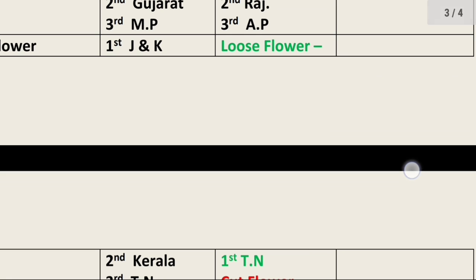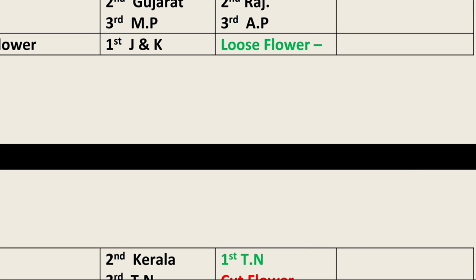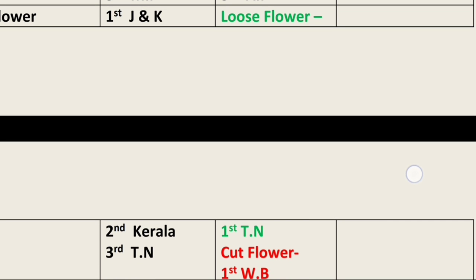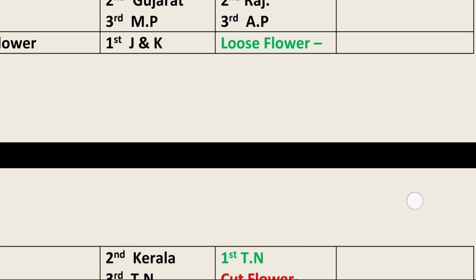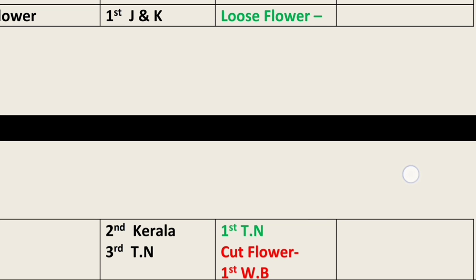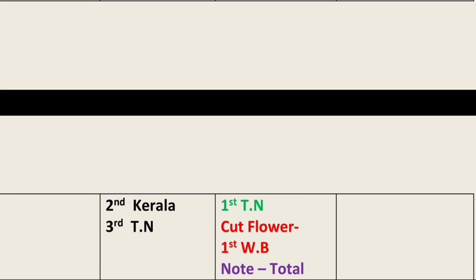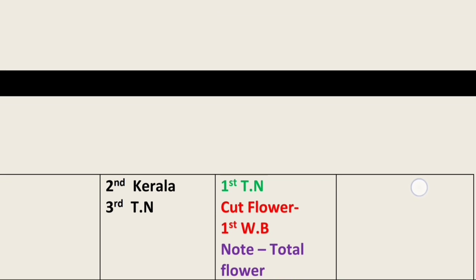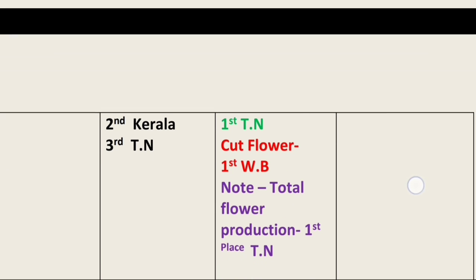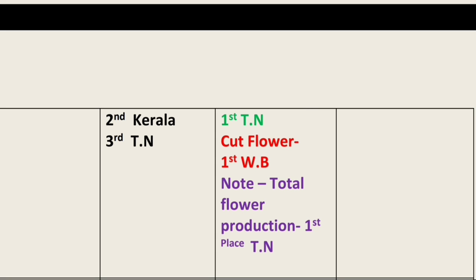In terms of flowers, the maximum area under floriculture is in Jammu and Kashmir, second place goes to Kerala, and third place to Tamil Nadu. For loose flower production, Tamil Nadu holds first place. For cut flower production, West Bengal holds first place. But for total flower production including both cut and loose flowers, Tamil Nadu takes first position.